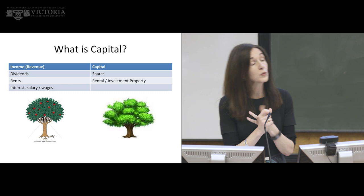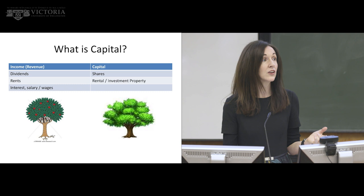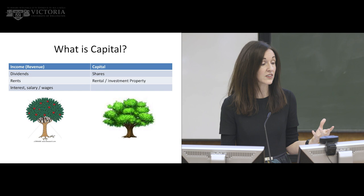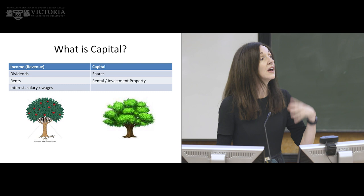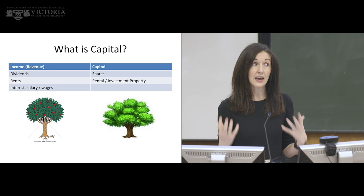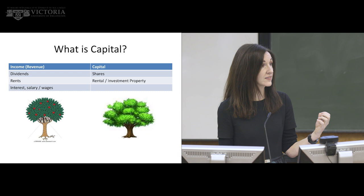In New Zealand, the two things which would be impacted most from a capital gains tax would be shares and real property. The shares themselves are the capital asset. At the moment, we do tax the income from that asset — that is in the form of dividends. The same thing happens with rental property. The rental property or an investment property is the capital asset, but the income stream from that capital asset is taxed — that's in the form of rents.